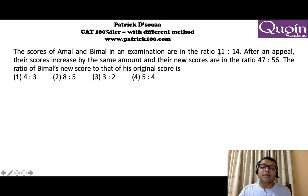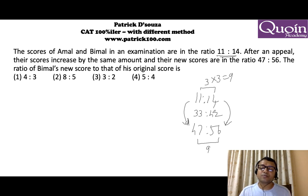The score of Ammal and Bimal in the examination is 11 to 14 and it becomes 47 to 56 later. We want the ratio of Bimal's new score to the original score. You're adding equal number of marks in both places. This is a common sum asked in banking exams where you add few things on both sides and get a new ratio. The way to solve this is look at difference: 11 and 14, difference is 3; 47 and 56, difference is 9. When you add same values on both sides, the difference should remain the same. To make the difference same, multiply 3 into 3. This becomes 33 and 42 after multiplying by 3. Bimal's new score to original score becomes 56 to 42, which is 4 to 3.